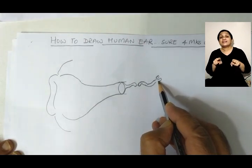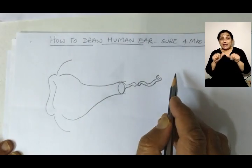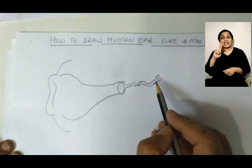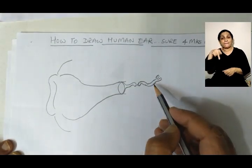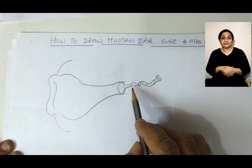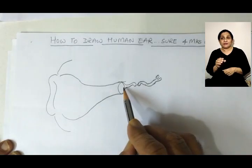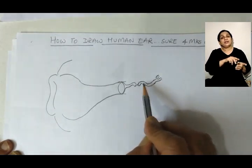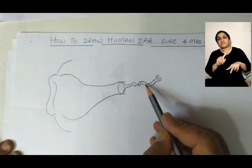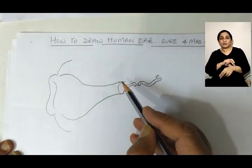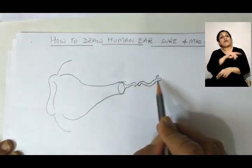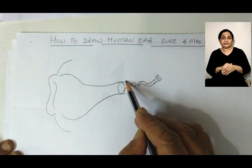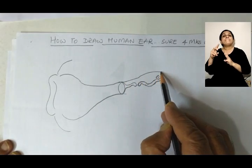The third small bone is the stapes, or stirrup, because it is in the form of a stirrup — this is the shape. The vibration gets transferred from one bone to the other and the whole thing vibrates. From here to here is called the middle ear portion.